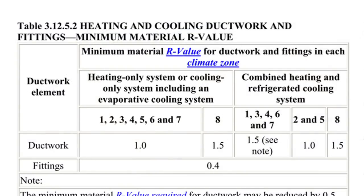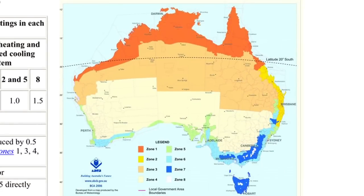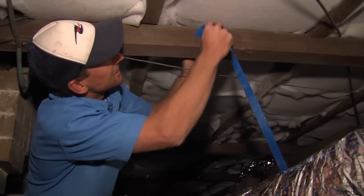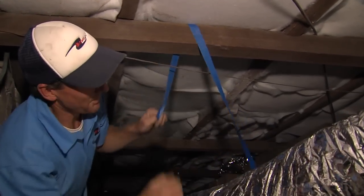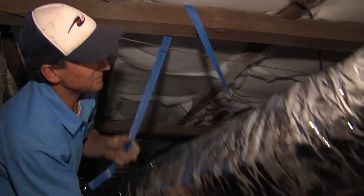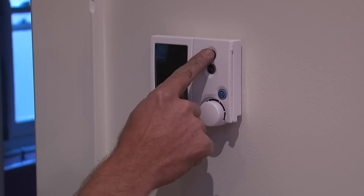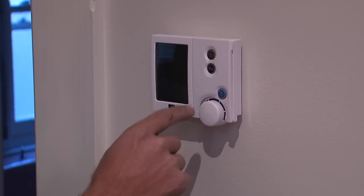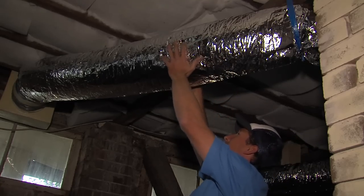Ducts must have the minimum insulation required for your climate zone — see our fact sheet for more info. Ducts are fragile, so try to locate them away from where they might be damaged, such as manholes. Once installed, turn the system on and check ducts for leaks.